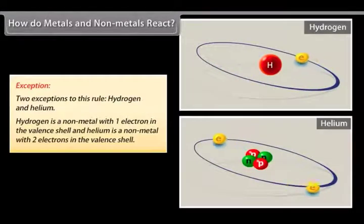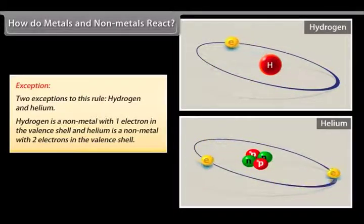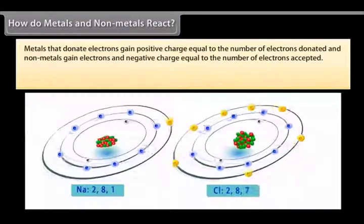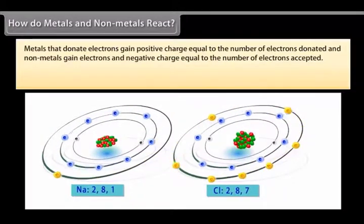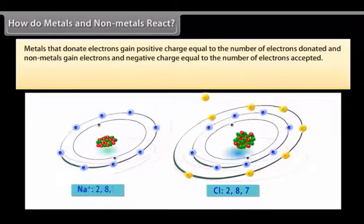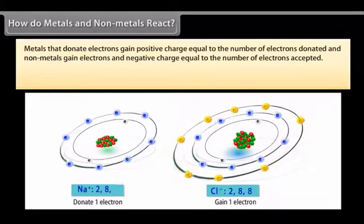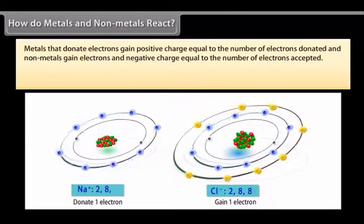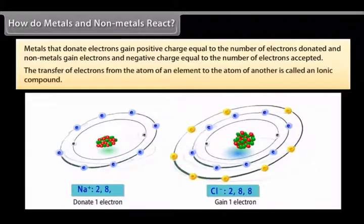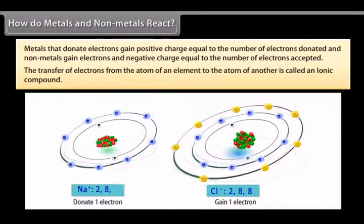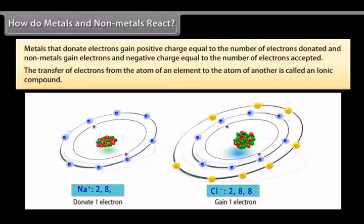Metals that donate electrons gain positive charge equal to the number of electrons donated. And non-metals gain electrons and negative charge equal to the number of electrons accepted. When a metal atom donates 1, 2 or 3 electrons from its valence shell to another non-metal atom that has the ability to accept these electrons, it is known as electrovalency. As a result of this, both these atoms form the structure of an inert gas. The transfer of electrons from the atom of an element to the atom of another is called an ionic compound.